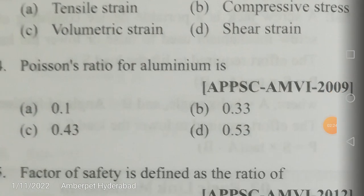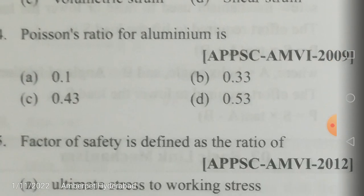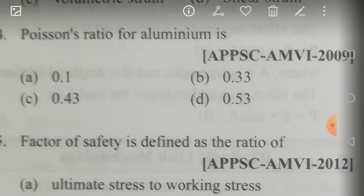The Poisson's ratio for aluminum is 0.33. Most materials have a Poisson's ratio — which is the ratio of lateral strain to linear strain — approximately between 0.25 and 0.33. Values of 0.43 and 0.53 are ruled out since the maximum value of Poisson's ratio is 0.5. The answer is 0.33 for aluminum.